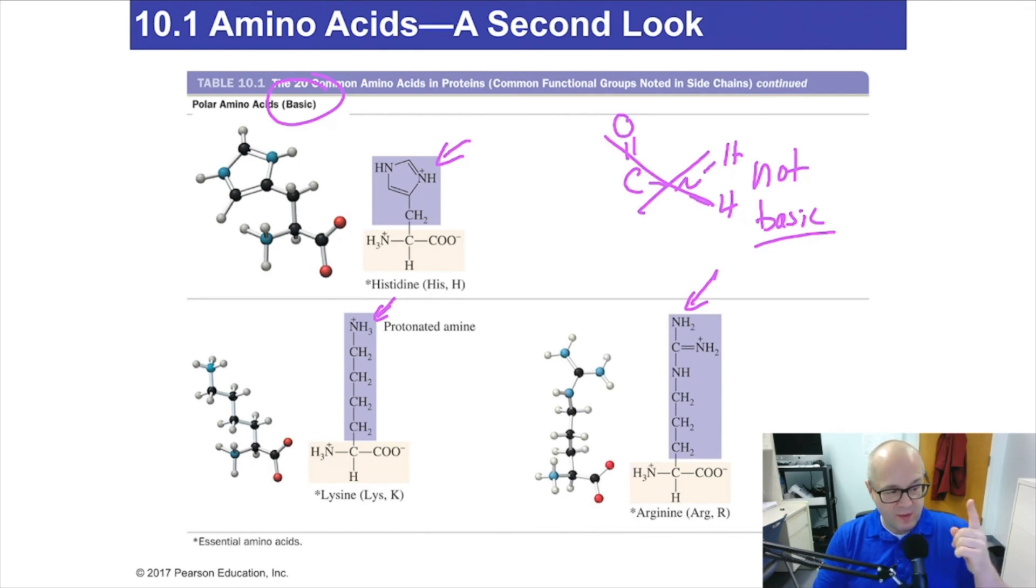So we have nonpolar, hydrocarbons only in the side chain or the R group. Polar, anything but hydrocarbon in the side chain. So oxygen, sulfur, nitrogen. Polar. Acidic, a carboxylic acid in the side chain, in the R group. Basic, a nitrogen in the side chain, excluding amides. So these, not basic. I know it's a little confusing. It's not as bad as you think. It really isn't. Hydrocarbons, nonpolar. Not a hydrocarbon, polar. Polar, if you're a carboxylic acid, you're acidic. Polar, if you're an amine, you're basic, and that's how it works.